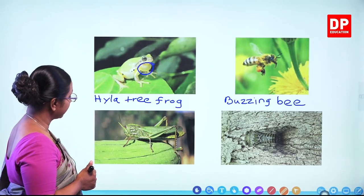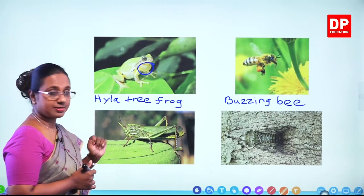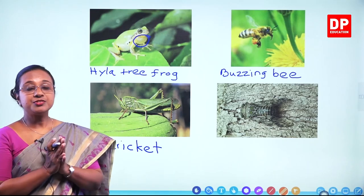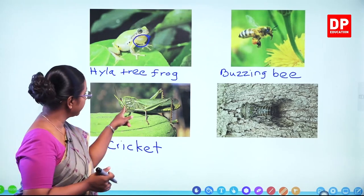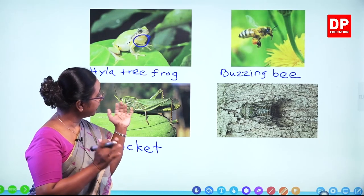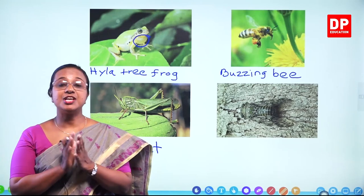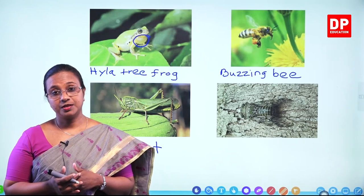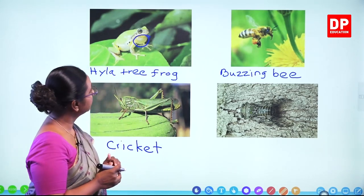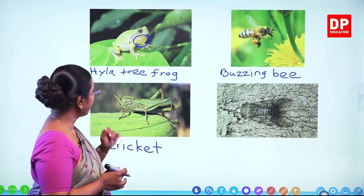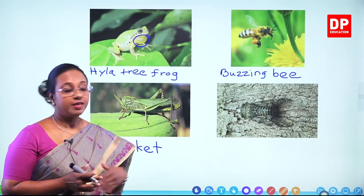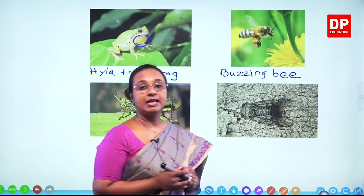The next example is a cricket. This cricket rubs its wings together and generates a vibration, and that produces a sound. So these are three different animals you are familiar with: the frog, buzzing bee, and cricket.